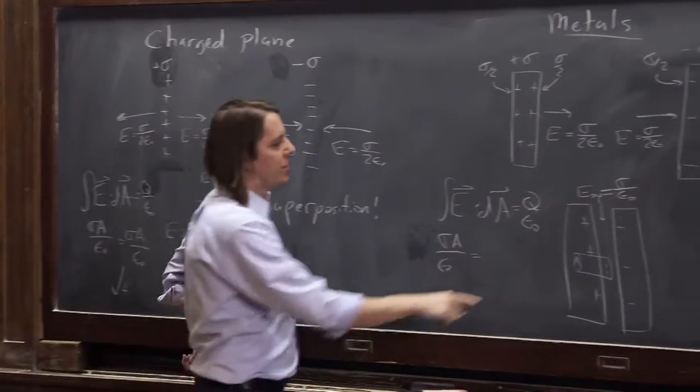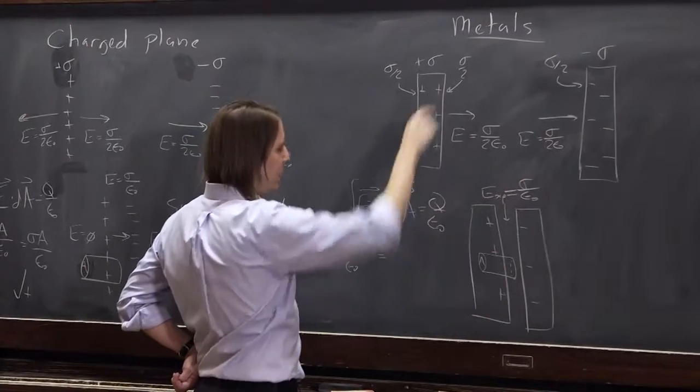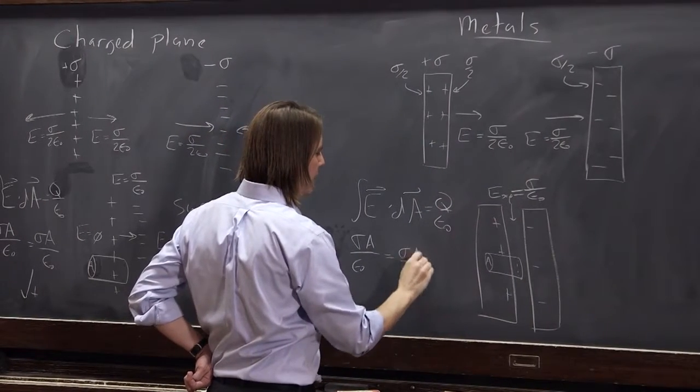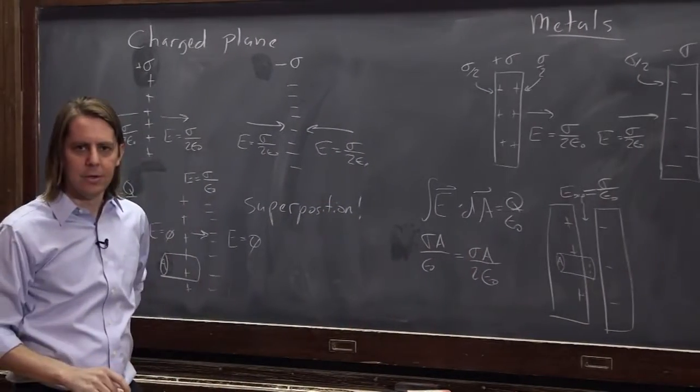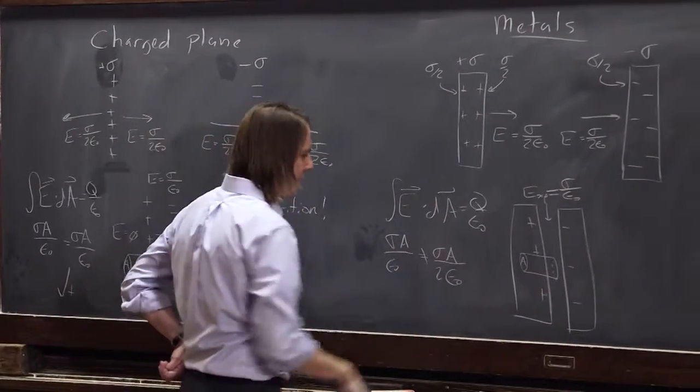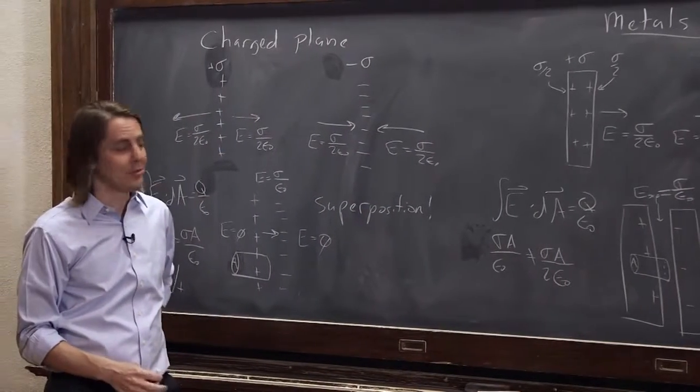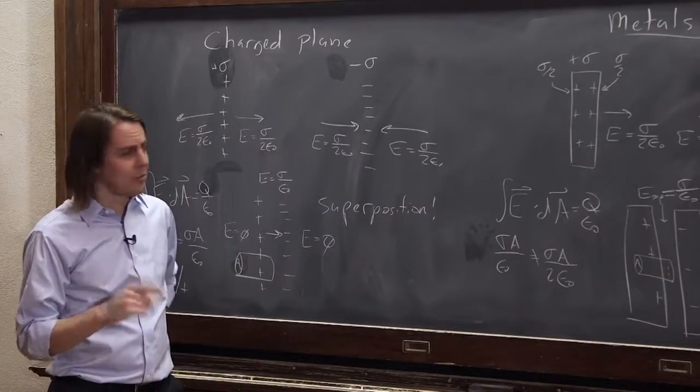Okay, the charge enclosed is what? Sigma over 2A over epsilon naught. Uh-oh, something's wrong here, Gauss's law isn't true. Gauss's law isn't true means something's wrong, something's gone very wrong. Here's what's gone wrong.